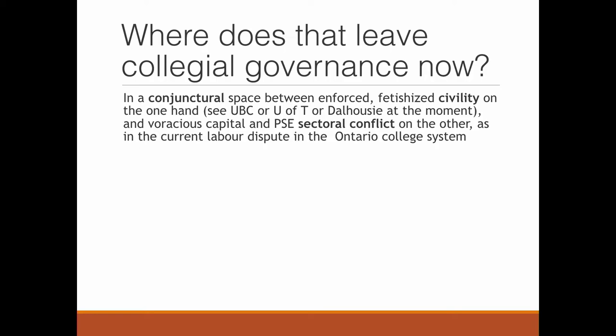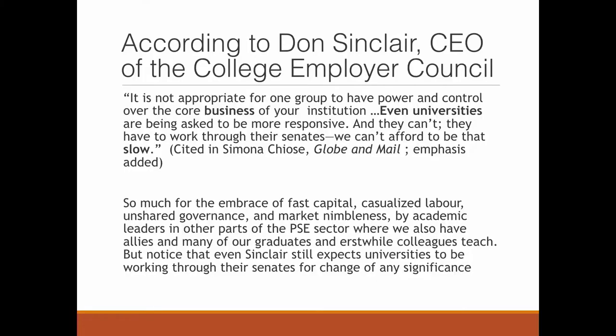And where does that leave collegial governance now? It leaves it in a conjunctural space between enforced fetishized civility on the one hand, see the freedom of expression draft from UBC at the moment or Jordan Peterson, the ultimate academic narcissist at the U of T or the travails of Dalhousie. All of these. And as well as this, there is voracious capital and the post-secondary education sectoral conflict, as in the current labour dispute in the Ontario college system. According to Don Sinclair, CEO of the College Employer Council, quote, and this is from Simona Chiose's piece in the Globe and Mail about the strike, it is not appropriate for one group to have power and control over the core business of your institution. Even universities are being asked to be more responsive and they can't. They have to work through their senates and we can't afford to be that slow.